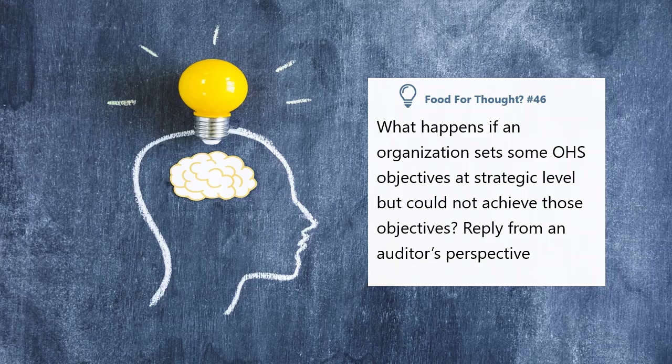What happens if an organization sets OHS objectives at strategic level but could not achieve those objectives? Reply from an auditor's perspective. Pause this slide and think about the answer before I explain. It is not mandatory that an organization must compulsorily achieve those objectives. However, as an auditor, you must review if the organization set OHS objectives after due deliberation and if they made efforts to achieve them. If they have not achieved the objectives, have they identified the root cause of the failure and taken corrective and preventive actions accordingly? A non-conformity shall only be raised if the auditor believes the organization has not done enough to achieve the OHS objectives or has not learned any lessons from their failure.